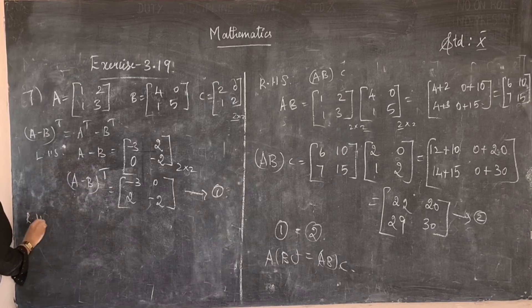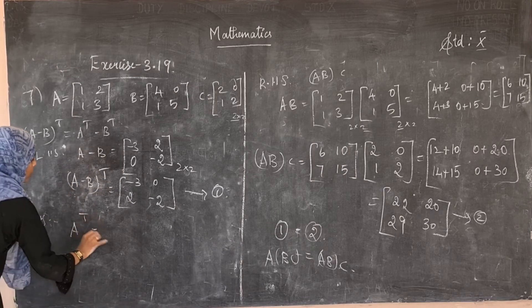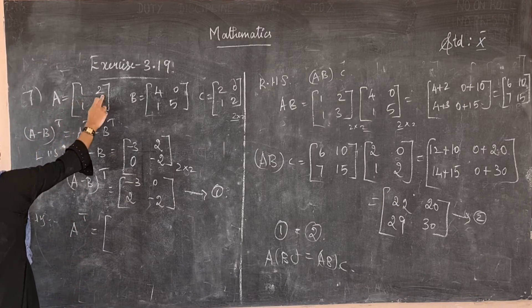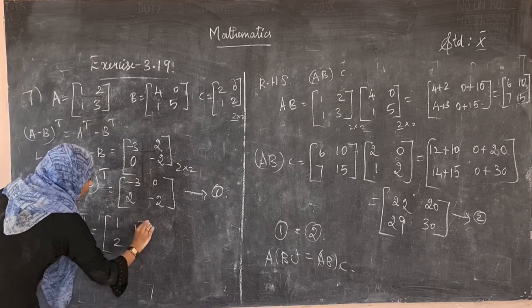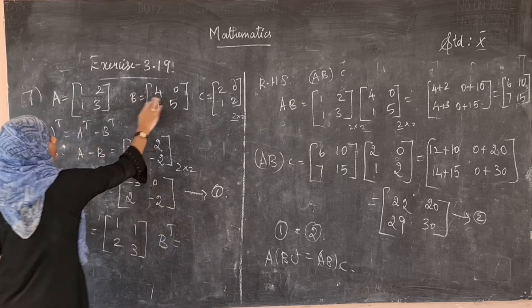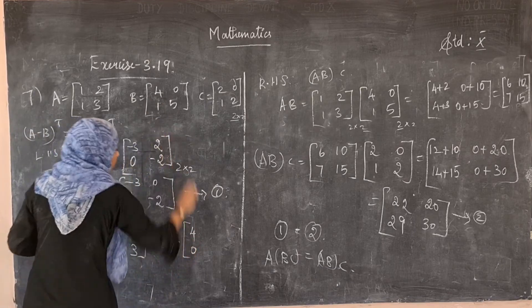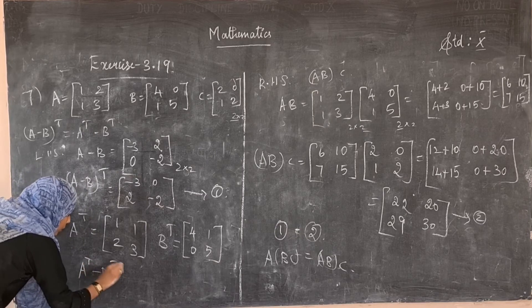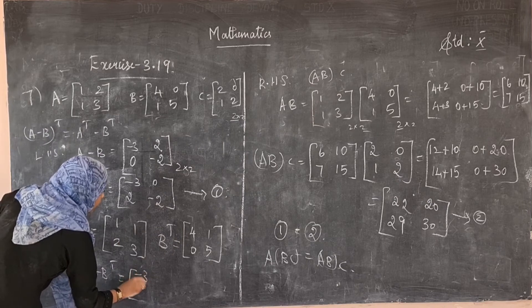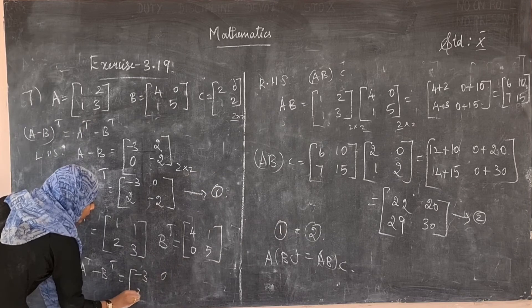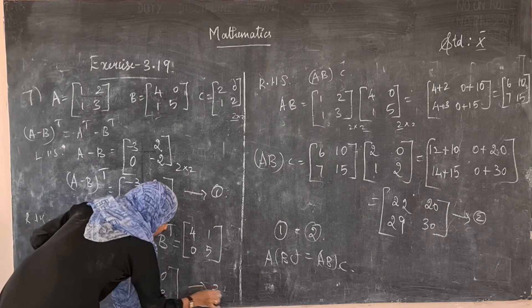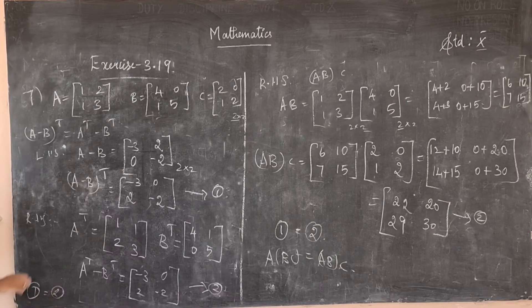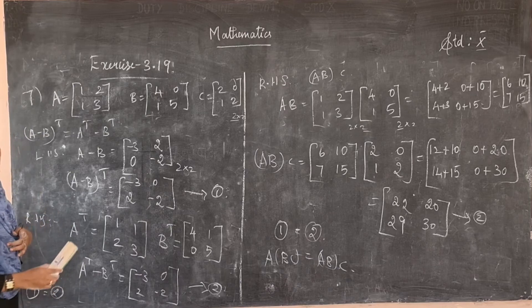Taking the transpose of (A−B) = [−3, 2; 0, −2], the first row becomes the first column, giving (A−B)^T = [−3, 0; 2, −2]. For the RHS: A^T = [1, 1; 2, 3] and B^T = [4, 1; 0, 5]. A^T − B^T = [1−4, 1−1; 2−0, 3−5] = [−3, 0; 2, −2]. Both sides are equal, hence verified.